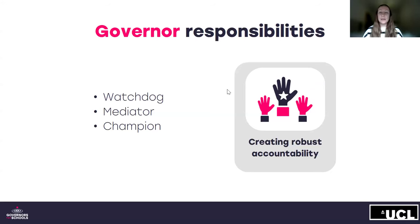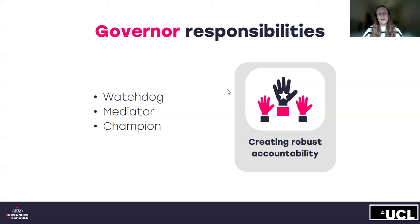Another way of looking at accountability is to break it down into watchdog, mediator and champion. As a watchdog you're there to make sure the right questions are asked, seek evidence to back up statements being made, and don't accept what's being reported on face value but make sure there's robust reasoning behind it. As a mediator you'll be juggling the needs of students, staff and parents as well as balancing the budget, bringing people and their opinions together to ensure the board is effective. And it's vital to be a champion — you need to celebrate the successes of the school and make sure that progress is recognised. As a volunteer, being passionate about the school is really what makes the role so satisfying.